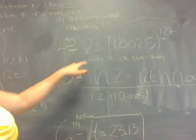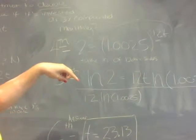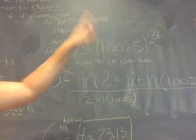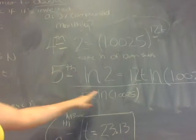With 2 equals 1.0025 to the exponent 12T. And then you take LN of both sides.